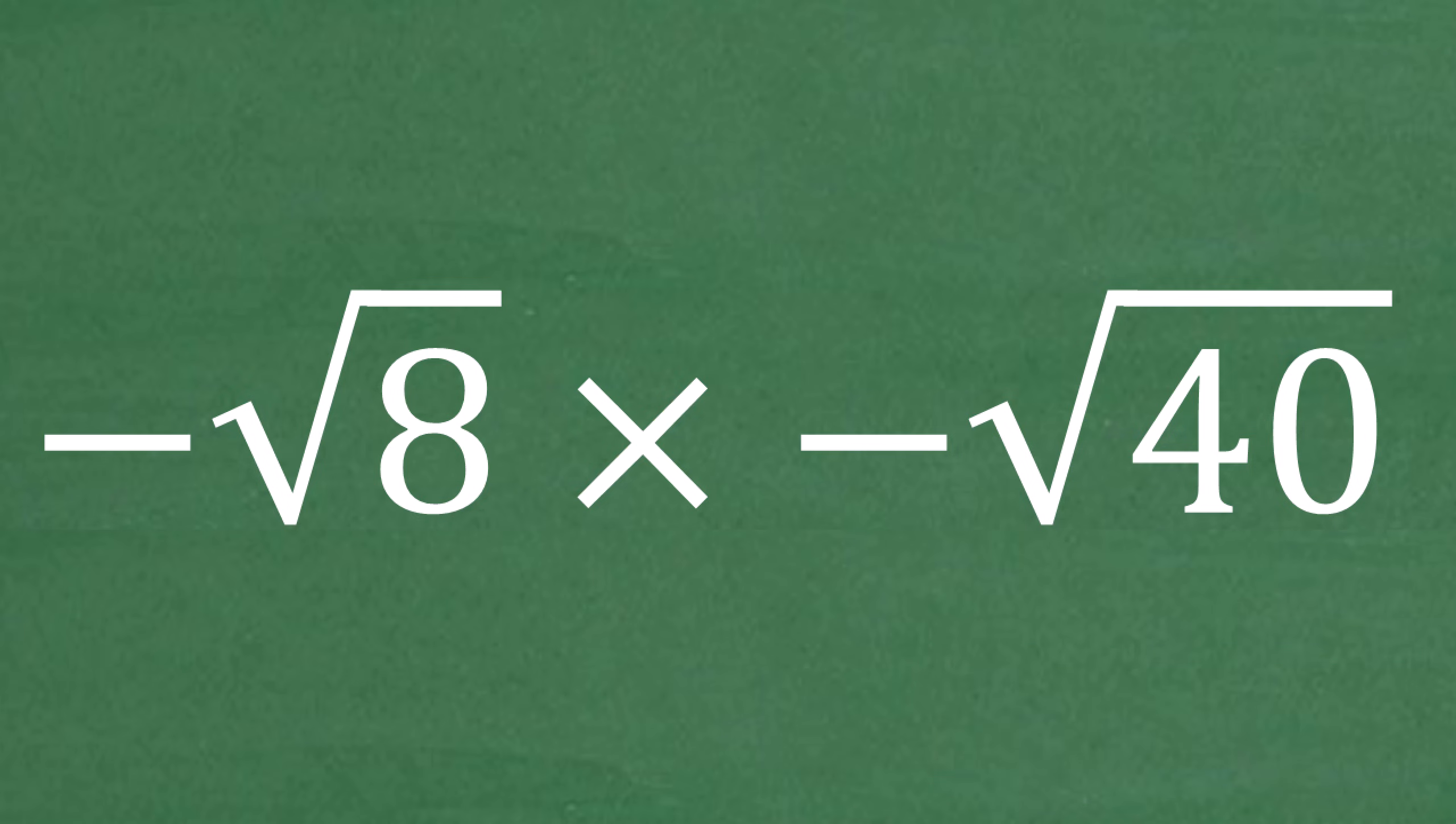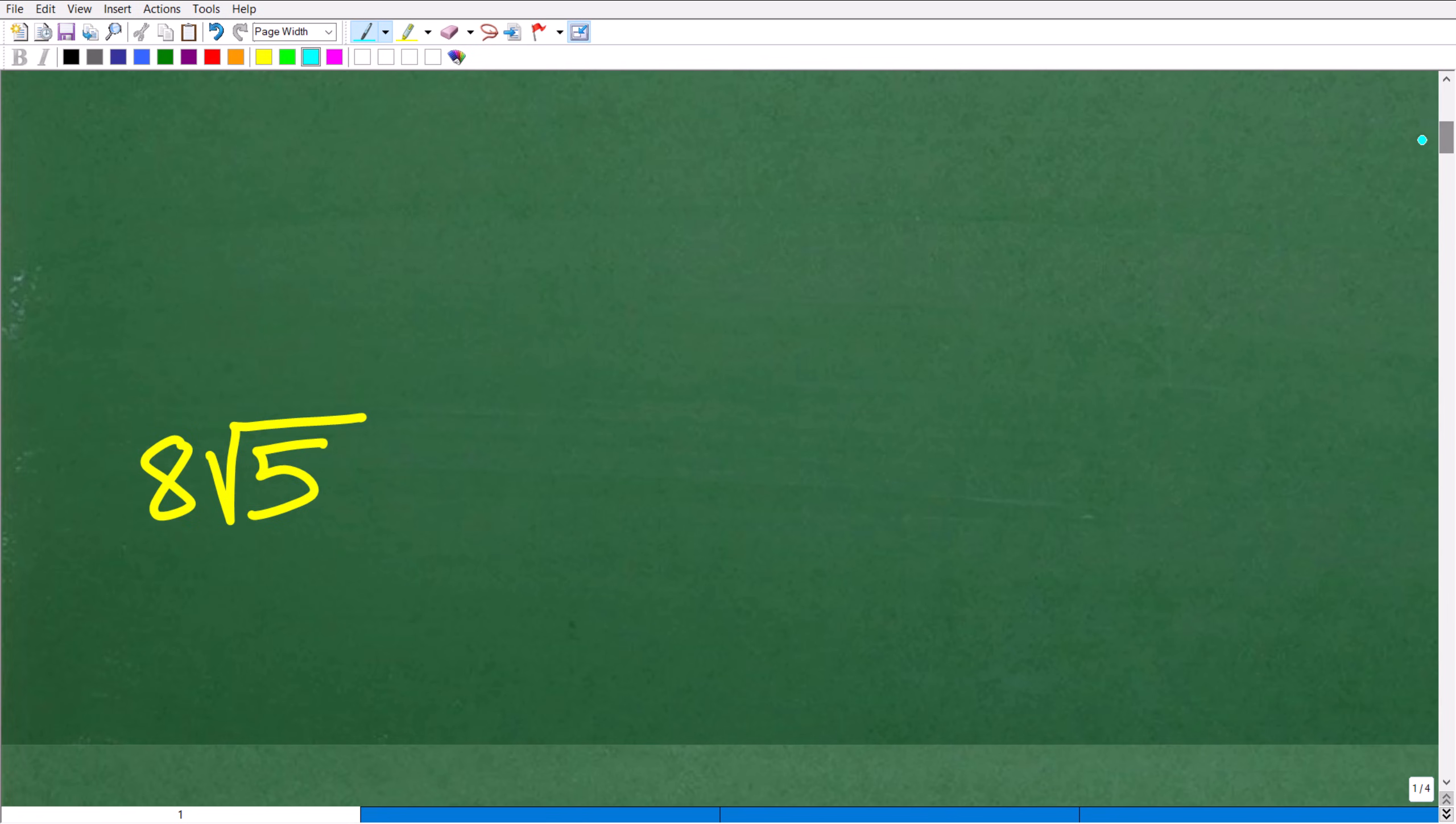Okay, so again, we have negative square root of 8 times negative square root of 40. What is this all equal to when it's all said and done? Well, hopefully, you came up with this answer right here. 8 times the square root of 5. This would be considered the correct answer.